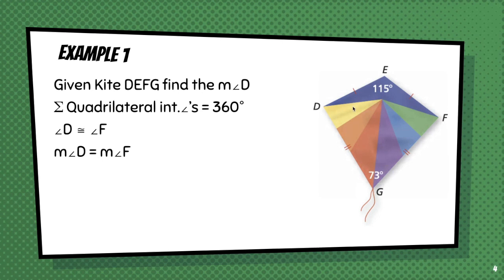But instead of doing that, we can simply write this equation. Two times the measure of angle D plus the measure of angle E plus the measure of angle G equals 360 degrees.